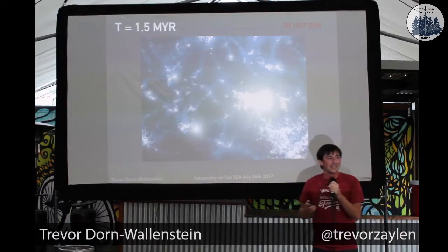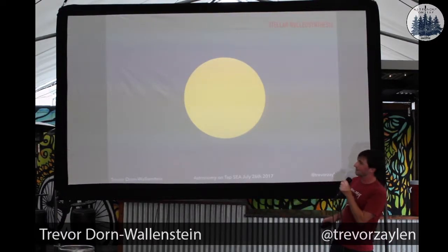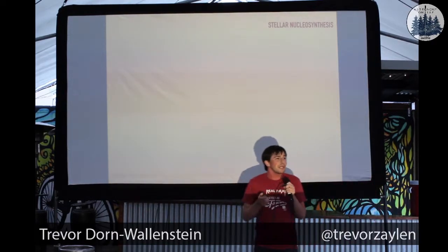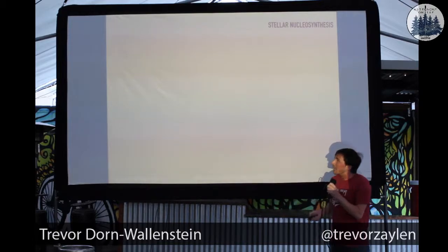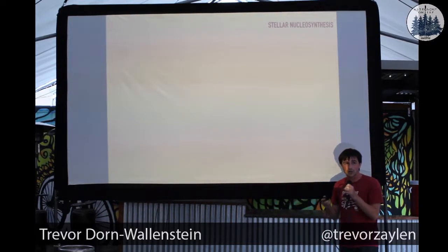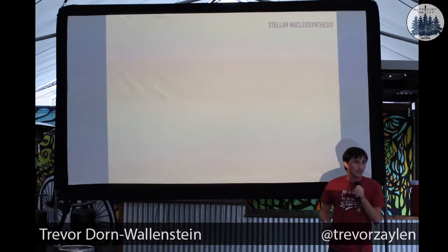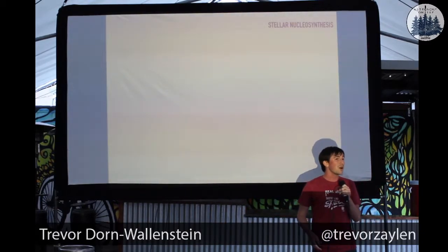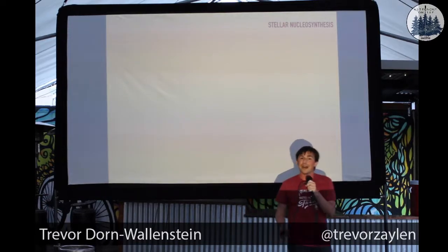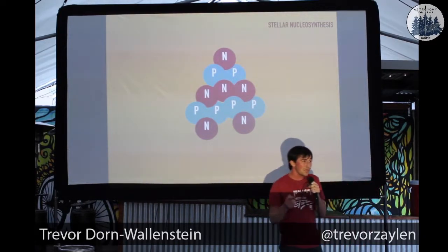Stars like our sun spend most of their 10-billion-year lifetime fusing hydrogen into helium, just like during the Big Bang. Towards the end of their lifetimes, stars do what's called the triple alpha reaction — so-called because three alpha particles go into it, and an alpha particle is helium-4. Here's how it works: take three helium atoms, smash them together, and you have carbon. We're all doing nuclear physics and it's so easy.